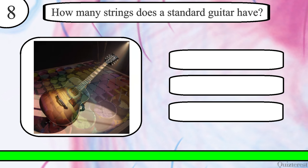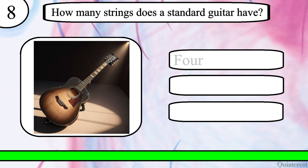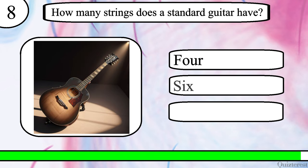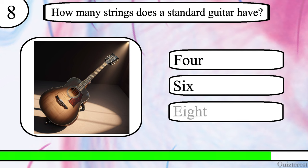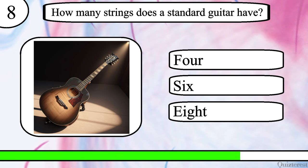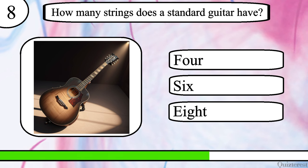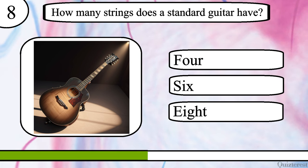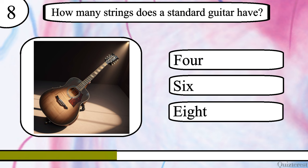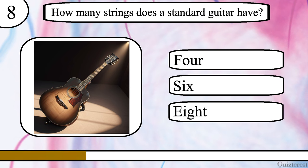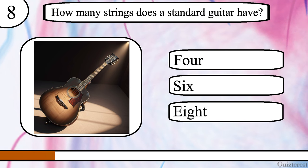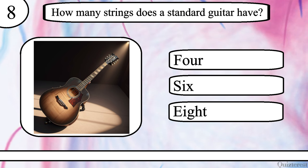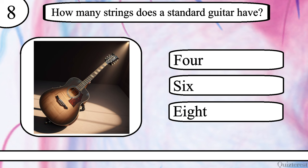Question 8. How many strings does a standard guitar have? 4, 6 or 8? The correct answer is 6.